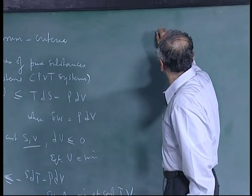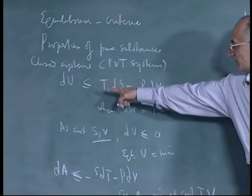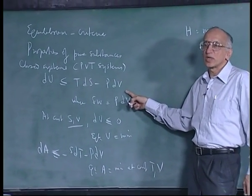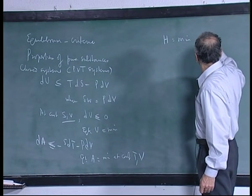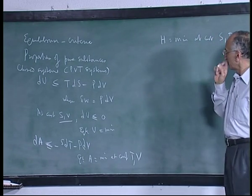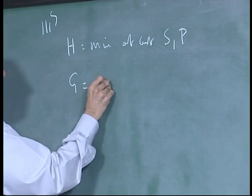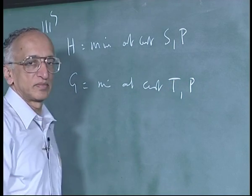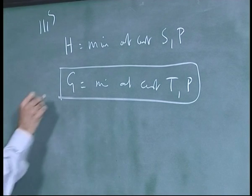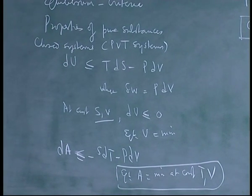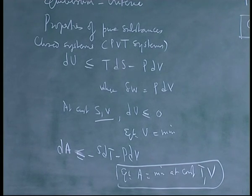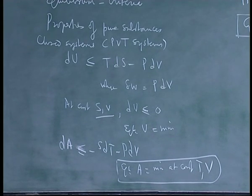For closed systems, H is a minimum — remember H is U plus PV, so adding d(PV) gives TdS plus VdP. Therefore H is a minimum at constant S and P. Similarly, G is a minimum at equilibrium at constant T and P. These two are the most important criteria of equilibrium. G being minimum at constant T and P is particularly convenient in calculus and also relates directly to industrial processes which are carried out at constant T and P.